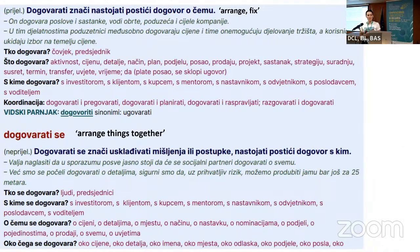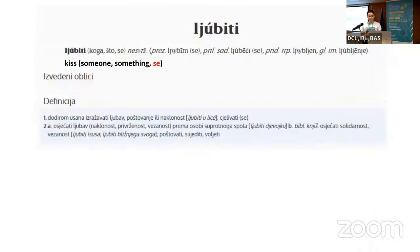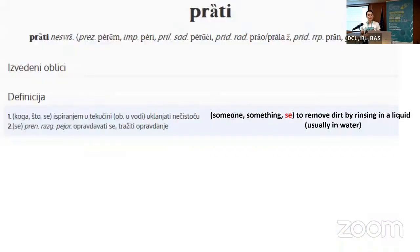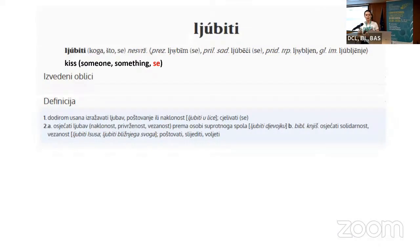Regarding reciprocal verbs, they are treated as sub-lemmas. In some dictionaries, 'se' is listed next to the object pronouns — for example, 'wash someone/something/se' — and the definition of the transitive verb follows. Similarly for 'ljubiti' (kiss), it is listed next to the object pronouns, but there is no further description indicating whether it is reciprocal or a proper verb.